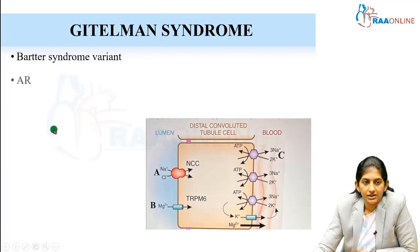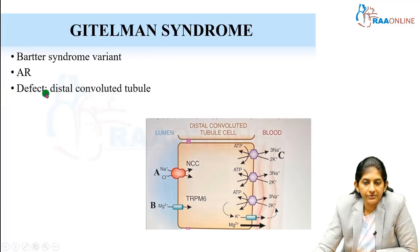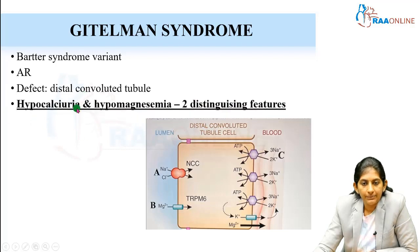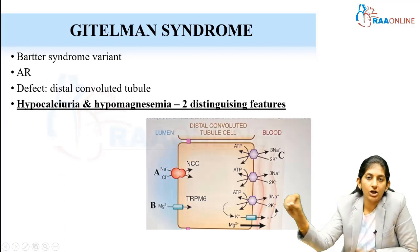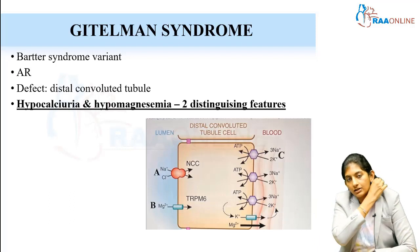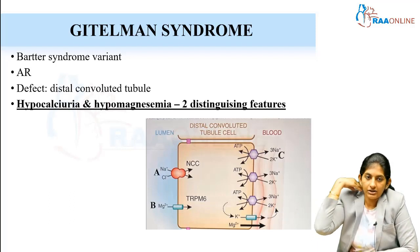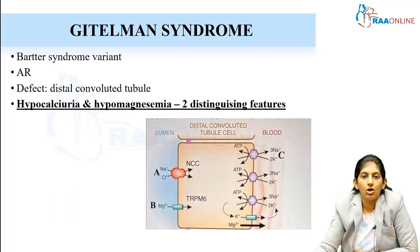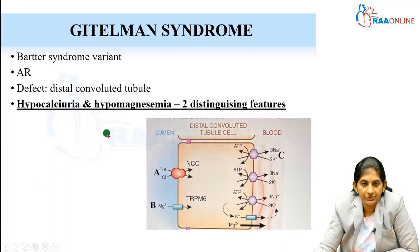It is a variant of Bartter syndrome, autosomal recessively inherited, and the defect is in the distal convoluted tubule. There is hypocalciuria here, but in Bartter there was hypercalciuria because calcium will not passively diffuse across the loop of Henle. There will be loss of calcium and hypomagnesemia.